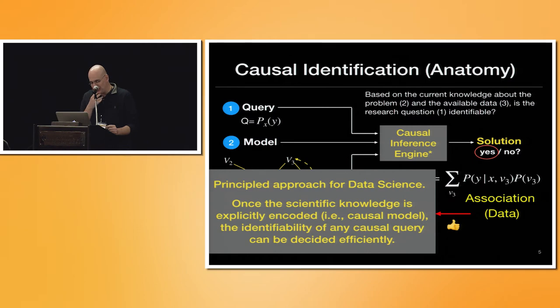The way that I like to think about that is like, I like to think that this is a principal approach for data science. Data science is nothing more than the intersection between AI and ML with the real sciences, the empirical sciences, that once the scientific knowledge is explicit, acknowledged, or articulated through the causal model in this case, identifiability of any of these queries, the causal queries, can be decided. It's a serial mathematical problem with implication to the sciences.